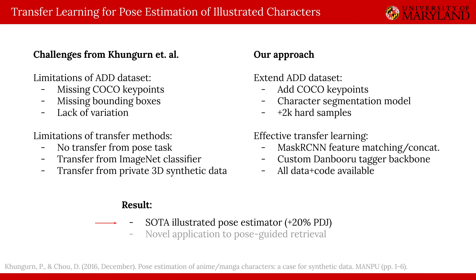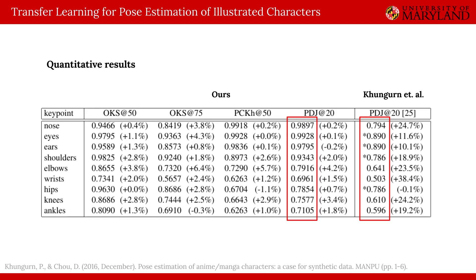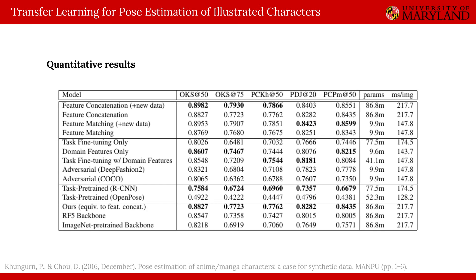With our methods, we achieve state-of-the-art pose estimation of illustrated characters. Due to keypoint incompatibilities, we may only compare PDJ as reported in Cungern et al., but as we see in this table, we are able to outperform their model by a significant margin of roughly 10–20%. We also provide comprehensive ablations of our model components. Please see our paper for more details.